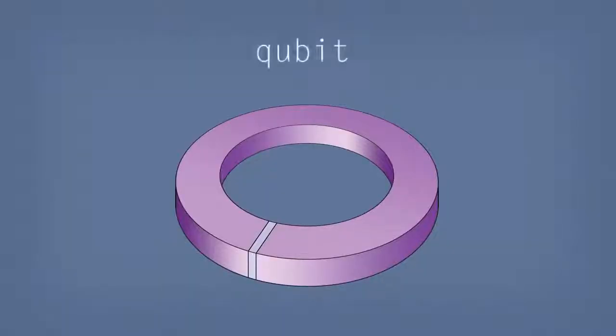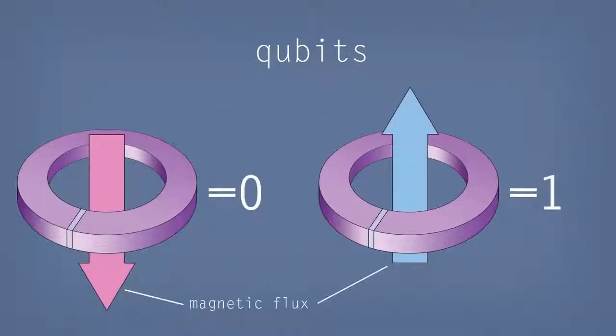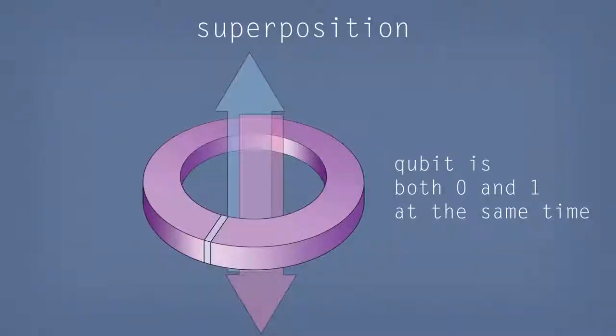So, the basic computational element in a quantum processor is a qubit. Now, a qubit is a lot like a bit, in the sense that it can encode a state 0 or a 1, but it's a quantum bit, q for quantum bit, and it has the additional property that can be in a superposition of 0 and 1 at the same time.